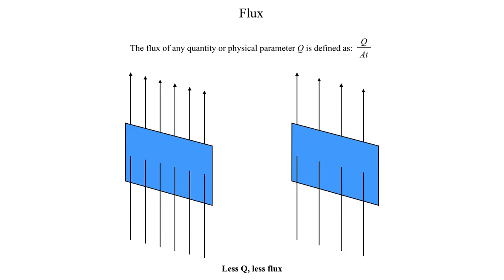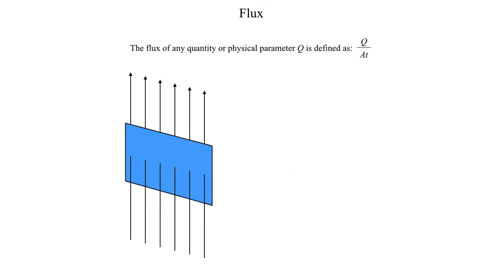Similarly, I can decrease the flux by decreasing the amount of stuff that I have flowing through the area per unit time. Same speed, same area, just less stuff. Less stuff flowing through the same area in the same amount of time means less flux.